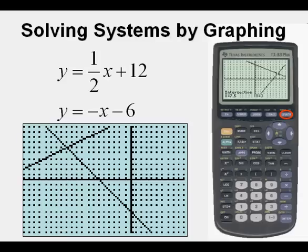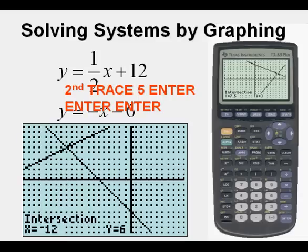And we graph it. And we see, in fact, that the intersection is in quadrant 2. And we press second, trace, 5, enter, enter, enter. And we get x equals negative 12, y equals 6. So that is our solution.